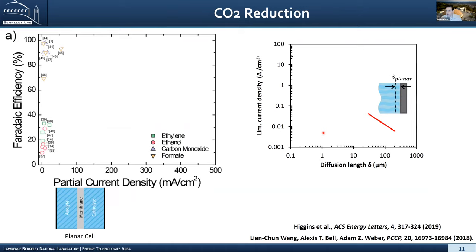For the rest of the talk, I'll go through CO2 reduction in more detail — taking CO2 and reducing it to fuels or value-added chemicals, a way to close the carbon balance and address CO2 emissions. Looking at Faraday efficiency — the amount of products going toward what we want, such as ethylene, ethanol, CO, or formate, but not hydrogen from the water splitting reaction — if we look at limiting current density as a function of diffusion length, all planar systems are limited to very small current densities. This will be a problem for scaling up the technology, requiring much larger and more expensive cells.